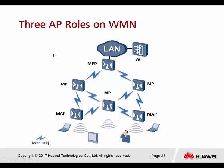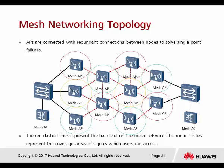For the WMN, there are three AP roles. Compared to WDS which had root, middle, and leaf, WMN uses different naming. The first is MPP (Mesh Portal Point) — this is the root AP connected to the uplink. APs located in the middle are called MP (Mesh Point), also called hub APs, whose main function is to transmit signals to connect all the MAPs. MAP stands for Mesh Access Point, which provides wireless access for all end users while also being connected to the MP nodes.